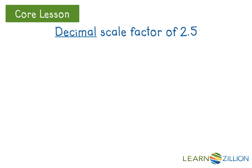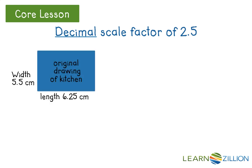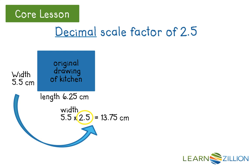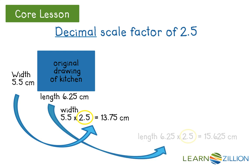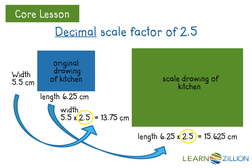Let's generate a new scale drawing with a decimal scale factor of 2 and 5 tenths. This time our original drawing has decimal dimensions of 5 and 5 tenths for width and 6 and 25 hundredths for length. The new dimensions are calculated the same way as with whole numbers and fractions. Multiply the dimensions of the original drawing by the scale factor to generate the scale drawing width and the scale drawing length. In this example, the scale drawing is an enlargement because it is an enlarged version of the original drawing.